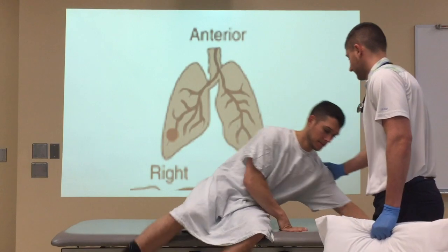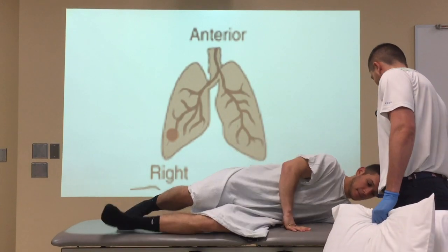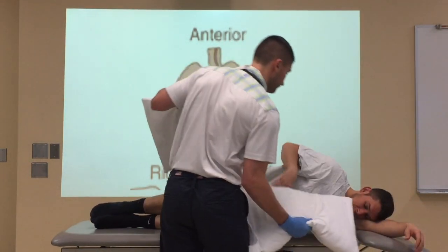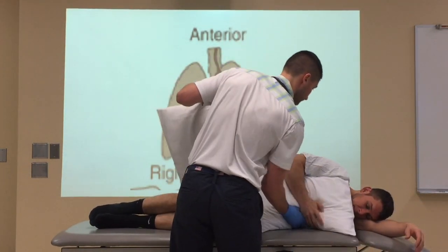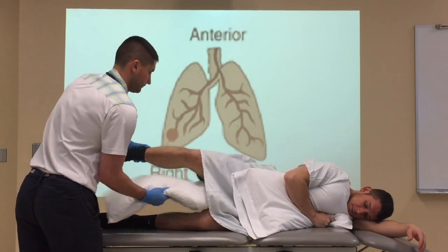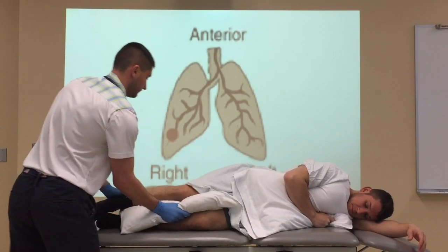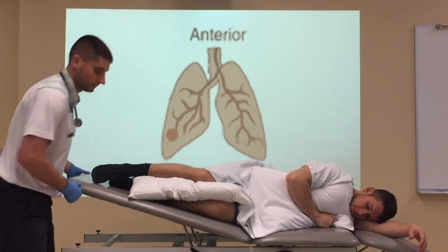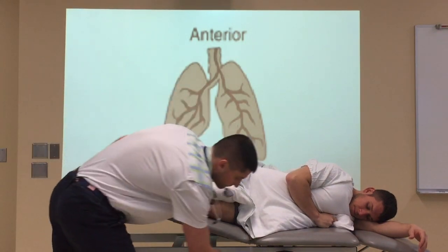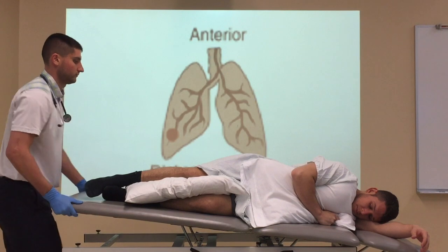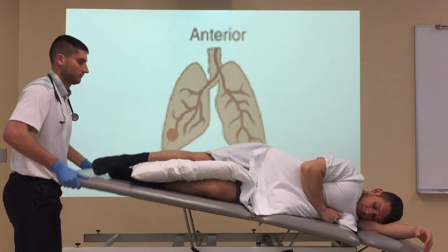For the right lateral segments, your patient should be positioned in left side lying with the table positioned in 18 inches of Trendelenburg. Pillows are held in the right arm and placed between the knees and ankles for comfort, as well as to address areas of high pressure, which clinicians should be aware of. To improve the efficacy of all postural drainage positions, patients should be well hydrated before treatment.